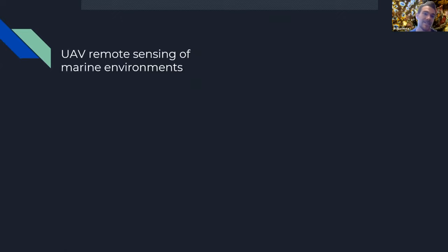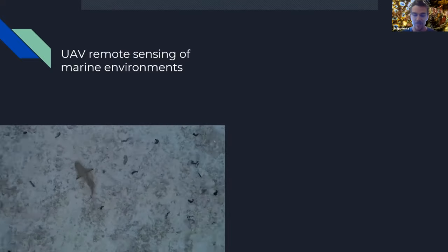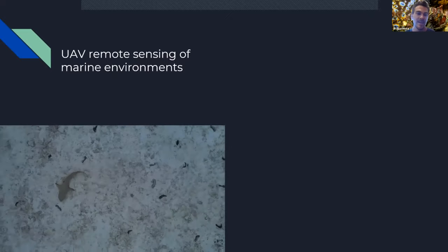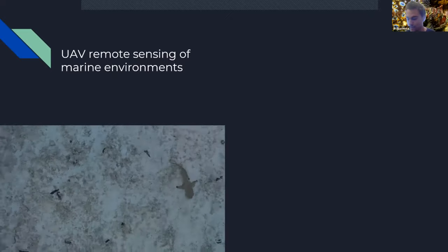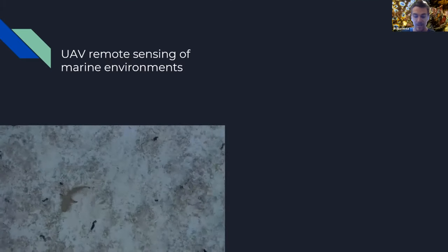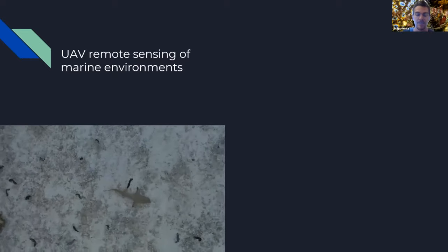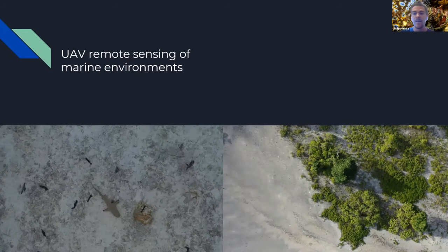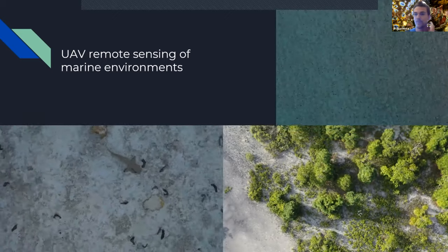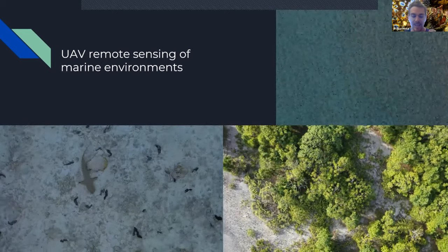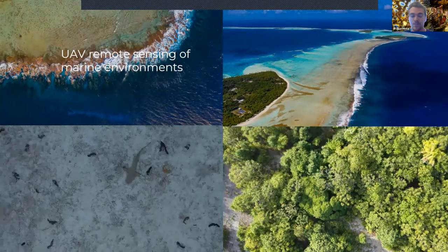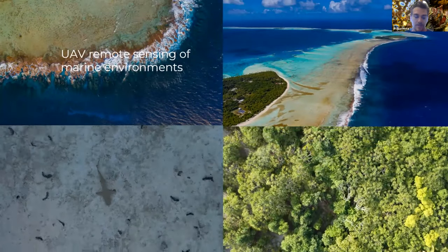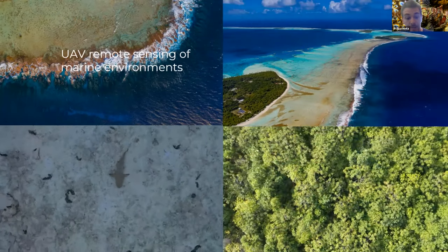So what exactly does that mean? A UAV is an unmanned aerial vehicle, also known as a drone. I've had the pleasure of using these to look at a variety of scientific questions — animal behavior such as sharks, population counts of birds, sessile organisms like sea cucumbers, and mapping large-scale structures of coral reefs. We've even used these to survey marine plastics on uninhabited islands we couldn't otherwise reach.